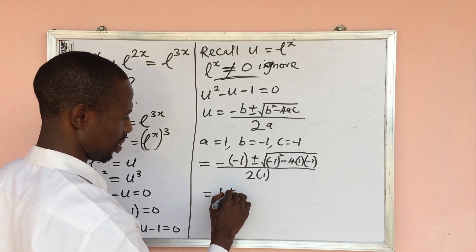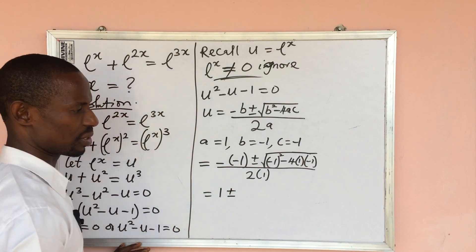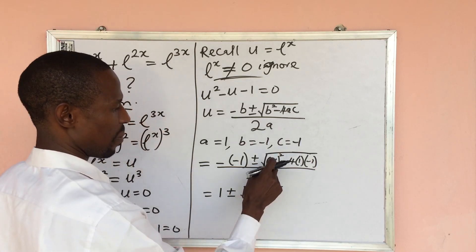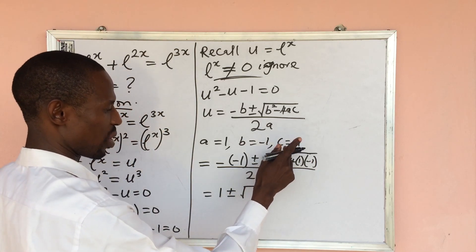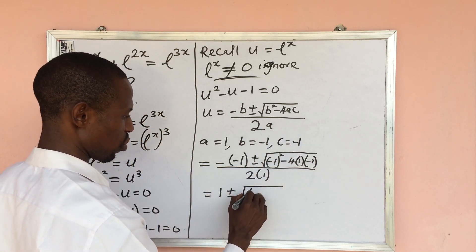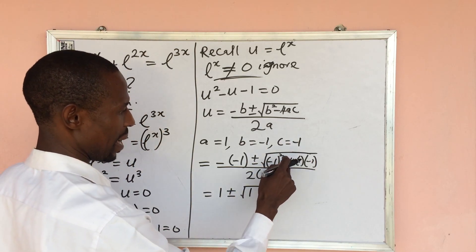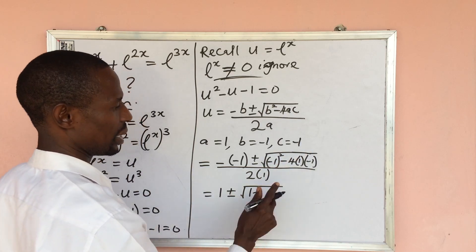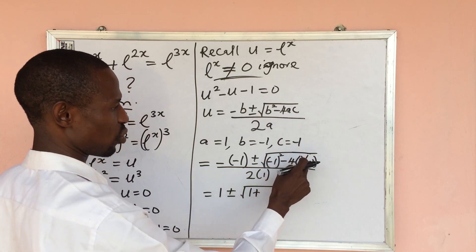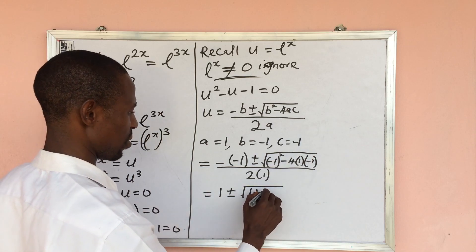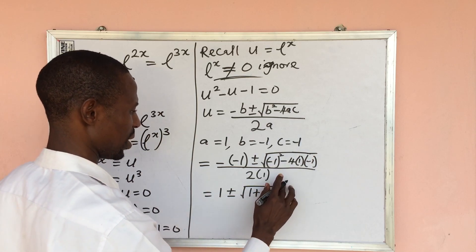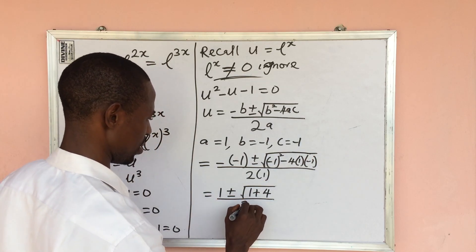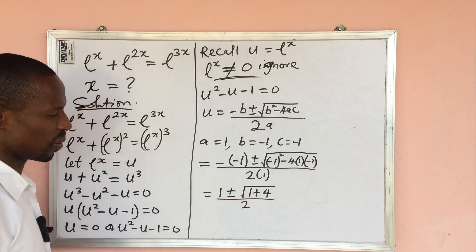Simplifying: negative times negative gives us positive 1, and under the square root we get 1 plus 4 equals 5. So we have 1 plus or minus the square root of 5, all over 2.